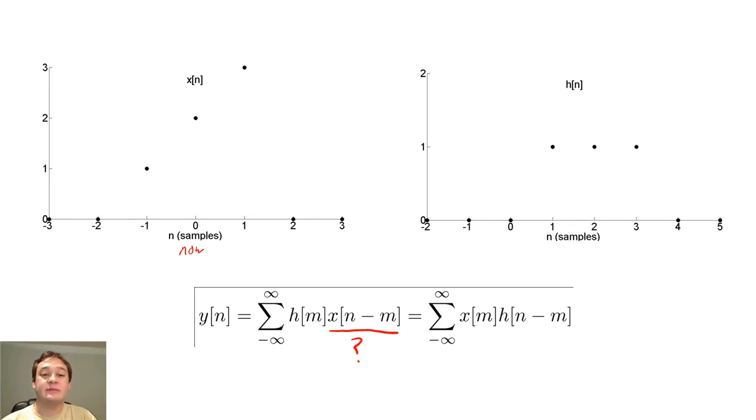So the negatively indexed samples will enter the system first. When we do our shift and add, we must flip our graph so that the samples we collect first will be processed first.